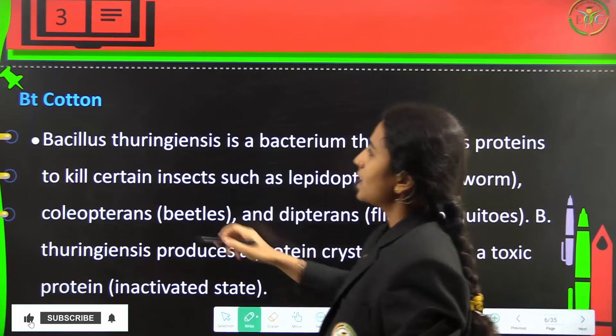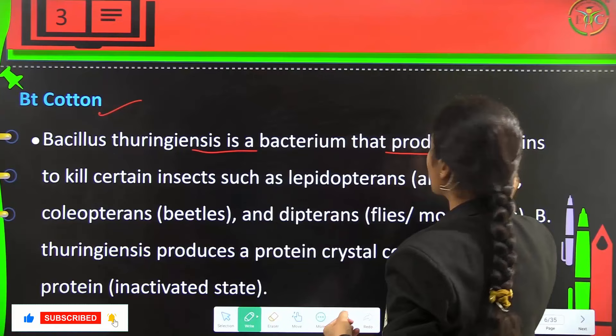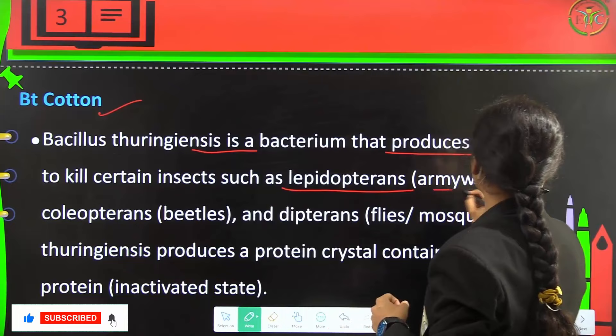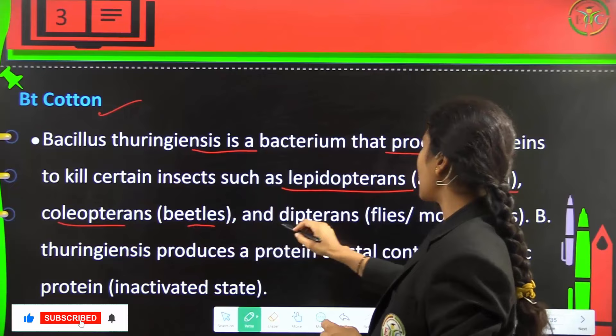Now Bt cotton. Bacillus thuringiensis is a bacterium which produces proteins to kill certain insects, such as Lepidopterans which are the army worms, Coleopterans which are the beetles, and Dipterans which are the flies and mosquitoes.